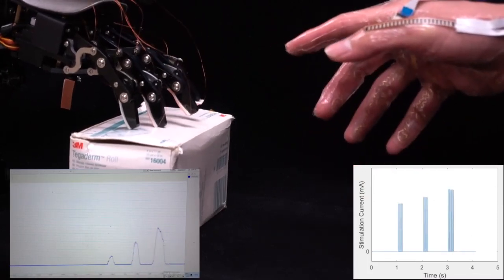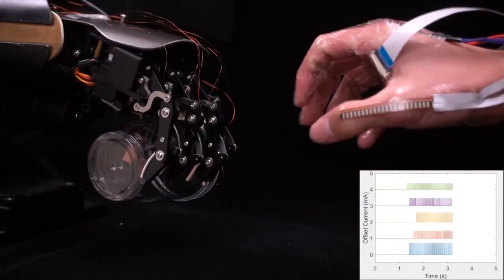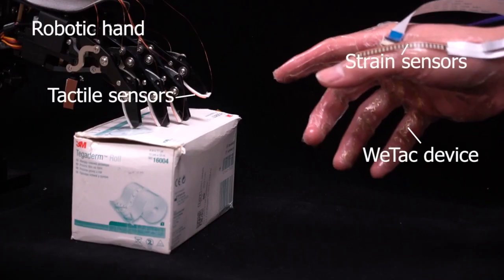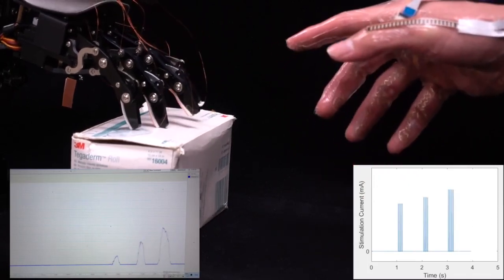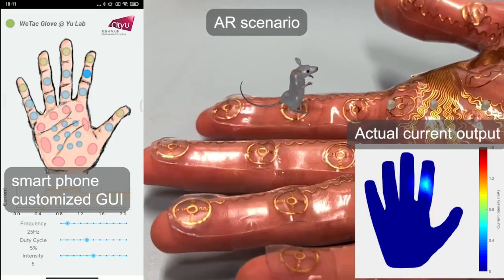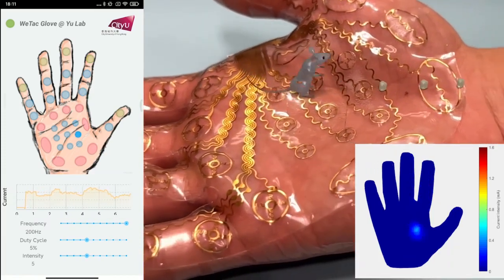The VTAC patches are worn on the hands to provide programmable spatiotemporal feedback patterns, with 32 electro-tactile stimulation pixels on the palm instead of the fingertips only. The average center-to-center distance between the electrodes is about 13 mm, providing wide coverage over the whole hand.